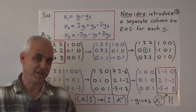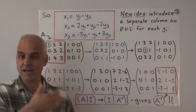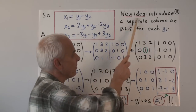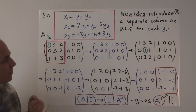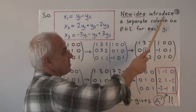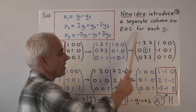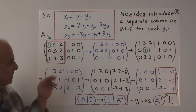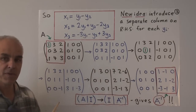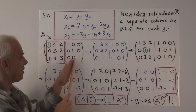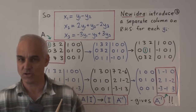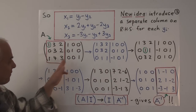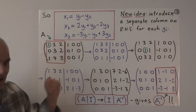You may have noticed that was a little bit involved because on the right-hand side, we had to manipulate y1s, y2s, and y3s instead of just numbers. So here's a new idea: what we can do in this kind of problem is simplify it by introducing a separate column on the right-hand side for each of the variables y1, y2, and y3. This means that instead of dealing with expressions like this, we just deal with how many y1s, y2s, and y3s there are at every stage.